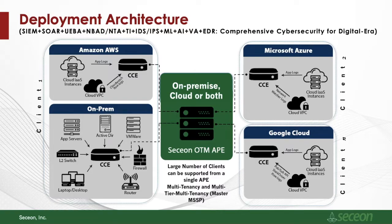As far as the deployment architecture is concerned, the platform can be deployed on-premises, in the cloud, or both. It supports high availability across clouds and enables a large number of clients to be supported with a single API. We have enabled multi-tenancy as well as multi-tier multi-tenancy for master MSSPs and our partners — hundreds of MSPs and MSSPs around the world — who are able to roll out hundreds of clients within a day.